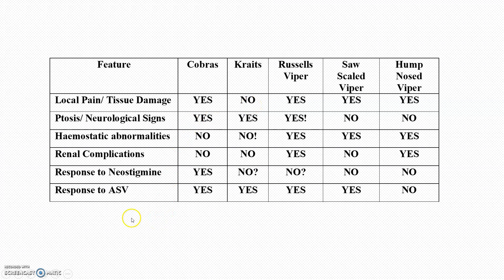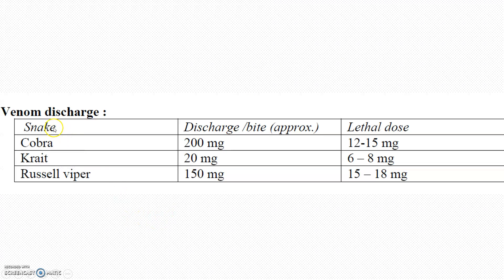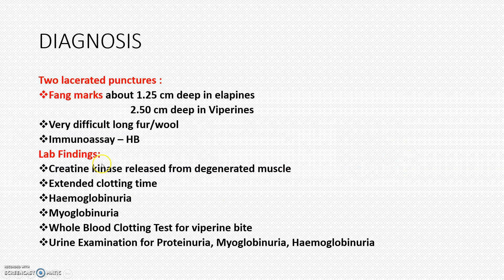Regarding venom discharge, in the case of the cobra approximately 200 mg is discharged per bite, but only 12 to 15 mg is needed to be lethal. Diagnosis involves identifying two lacerated puncture marks, fang marks, and immunoassay testing, along with various lab findings.